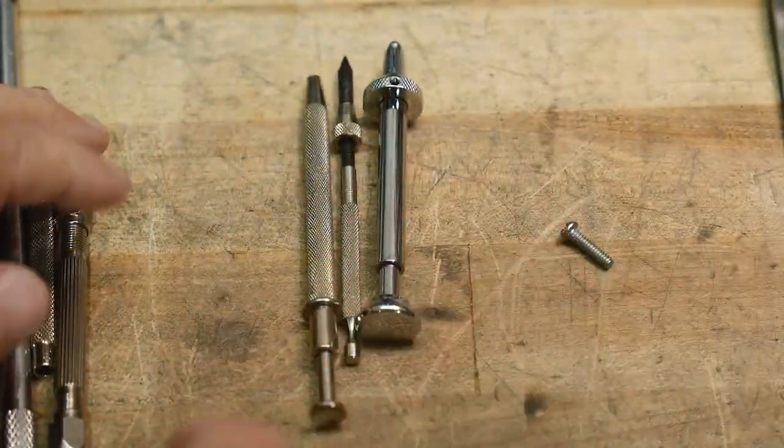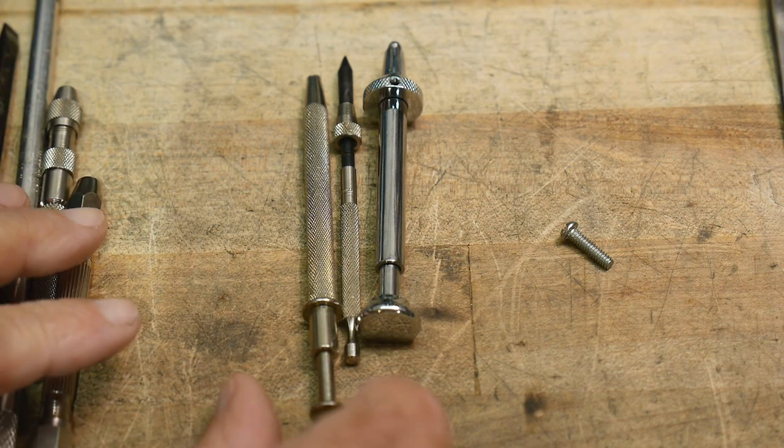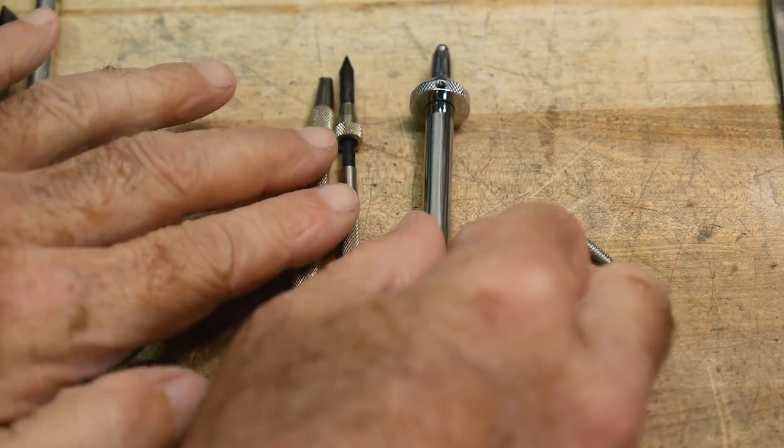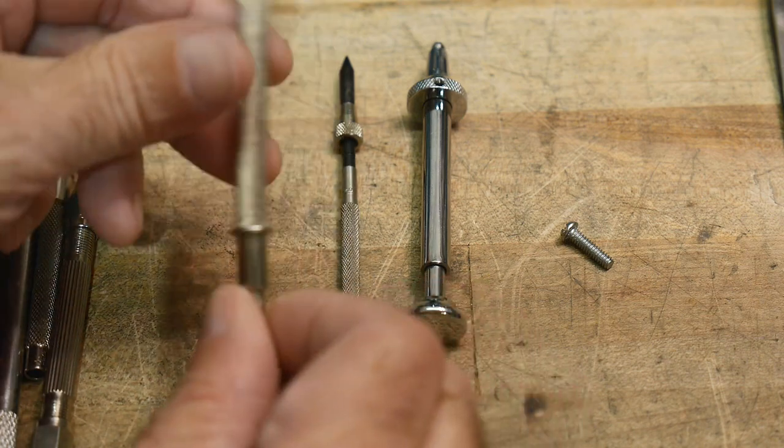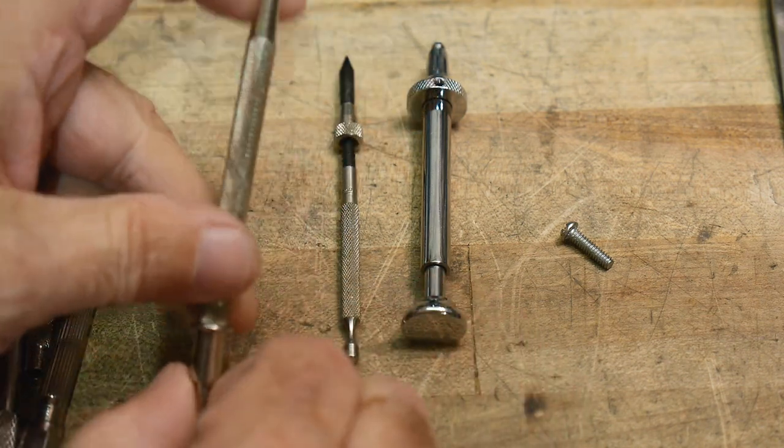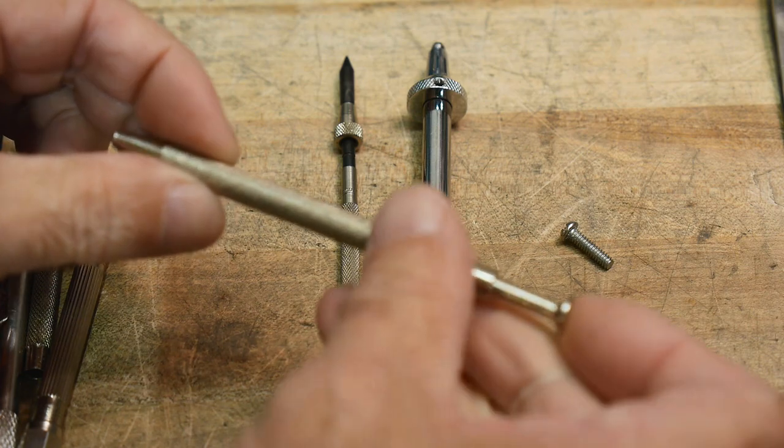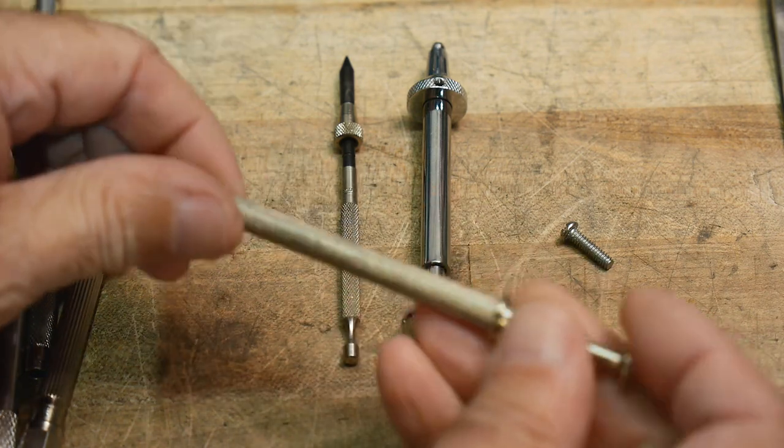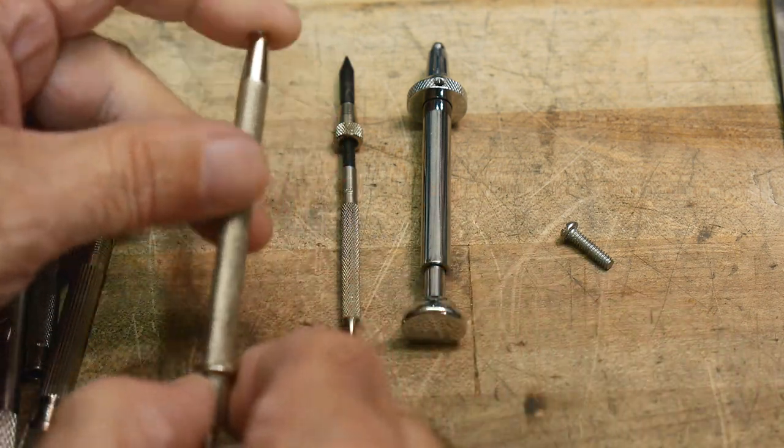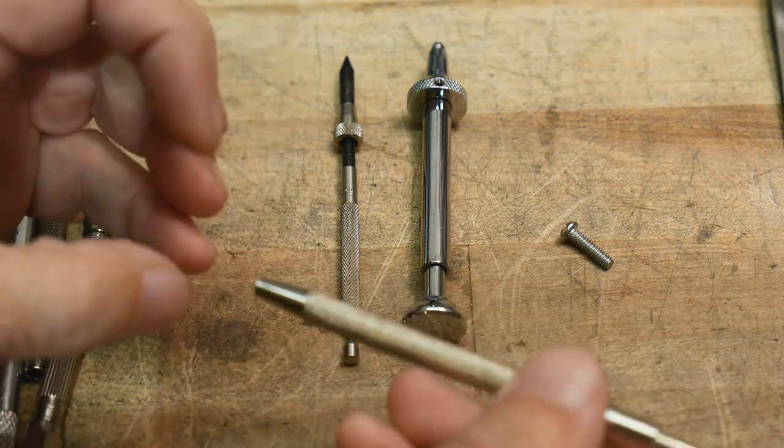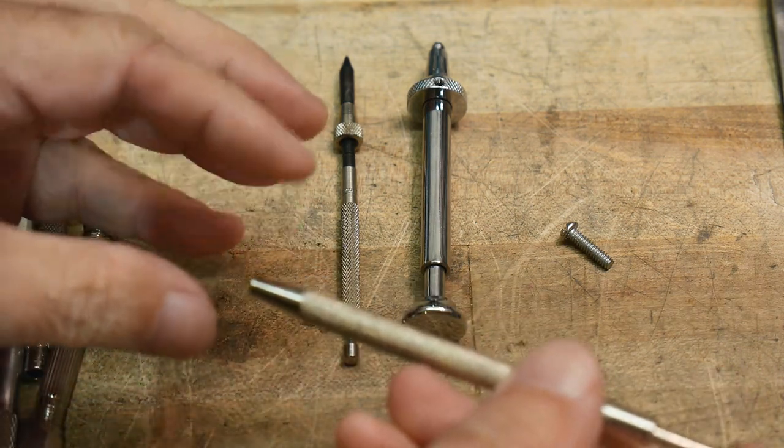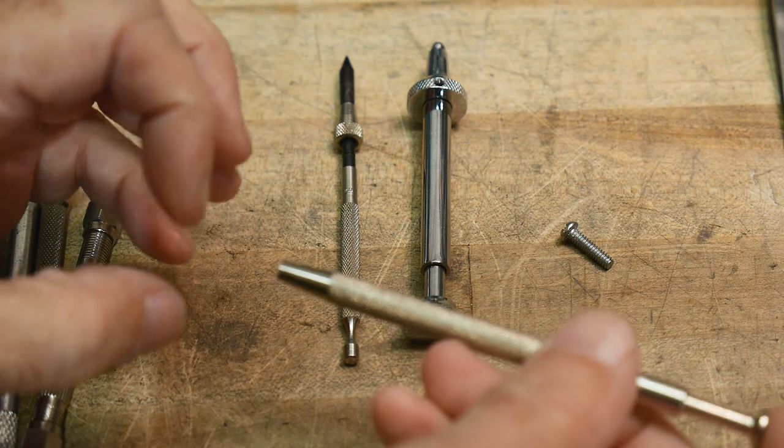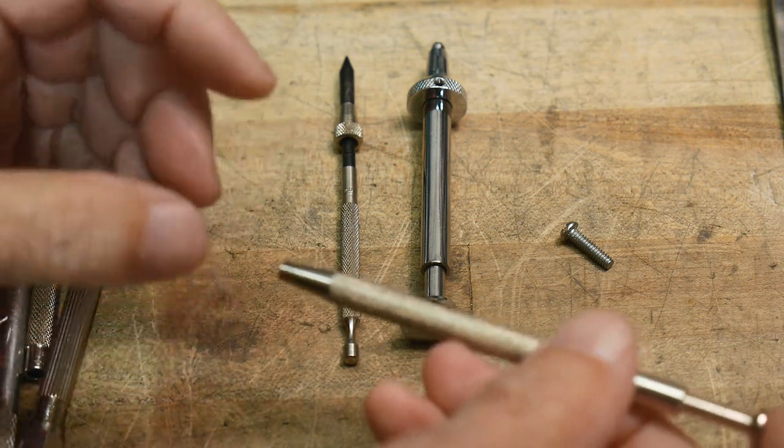So these are the tools that I wanted to talk about though. These are the ones that you might not have ever run across before. So this one's kind of interesting. You will find this mostly in jewelry supplies, jewelry making supplies. They need to be able to grab small things like stones like diamonds or whatever.